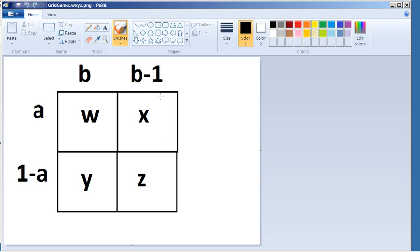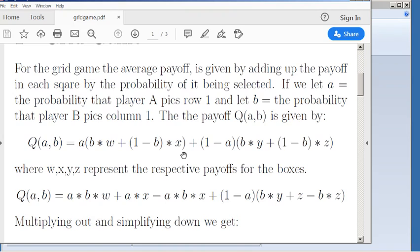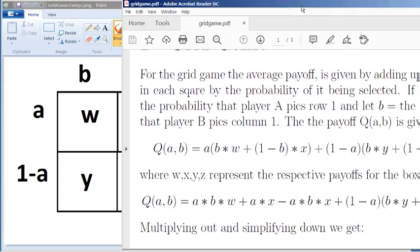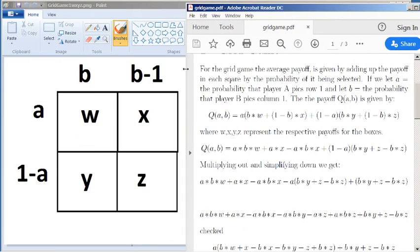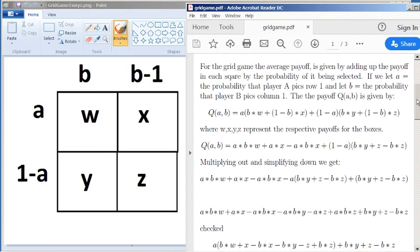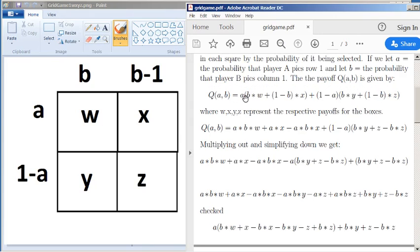So what I do is to look at it algebraically, we're going to just call the payoffs in the box w, x, y, and z. And then we can write, in terms of w, x, y, and z, the payoff. So what I've done is I've split it into two rows. So the first row is a times the probability for that row, and then it's 1 minus a times the probability. So this is the second row, this is the first row, to keep it simple.